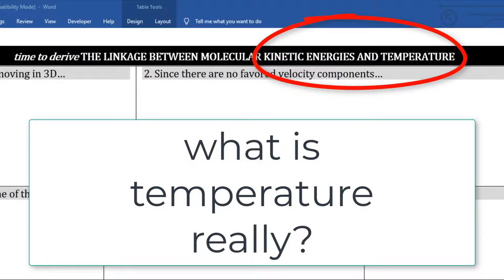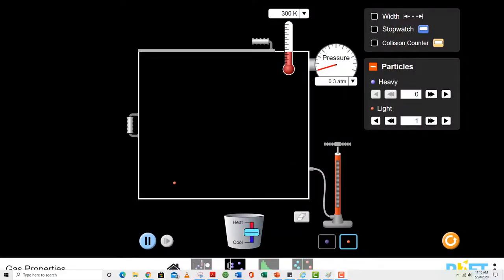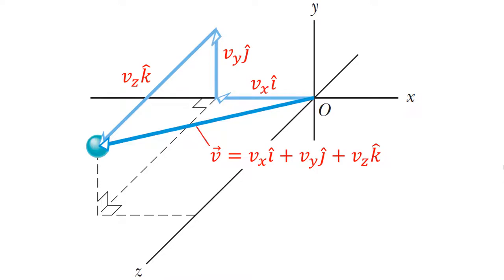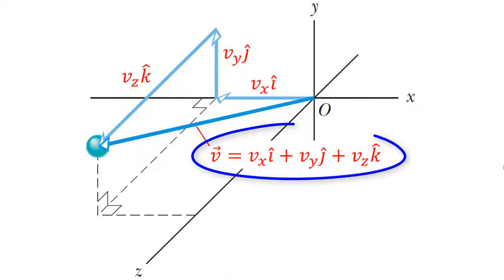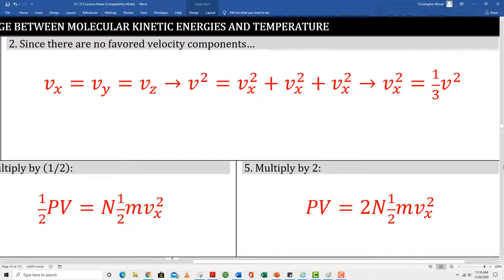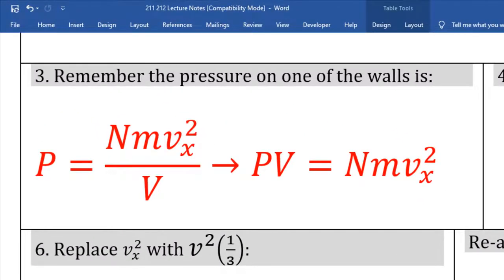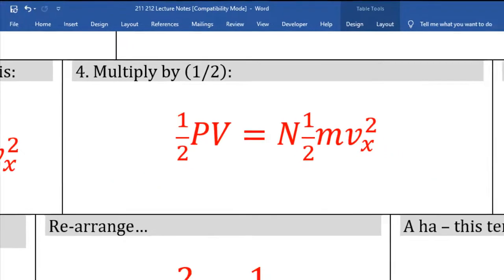Just like we found out what pressure really is from a microscopic point of view, we're going to do the same thing with temperature — find out what temperature really is from a microscopic perspective. Gas particles have three velocity components; box 1 is basically Pythagoras' theorem in three dimensions. The net velocity of a green gas particle possesses three components: Vx i-hat, Vy j-hat, and Vz k-hat. Box 2 says there's no distinguishing any vector component from any other — on average, all three have the same magnitude. In box 3, I'm recycling the expression for pressure in terms of its underlying microscopic properties.